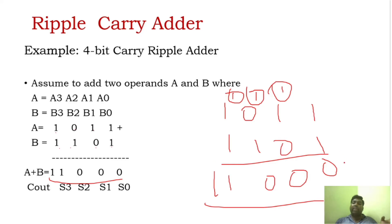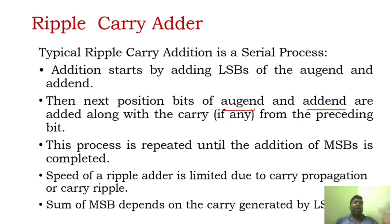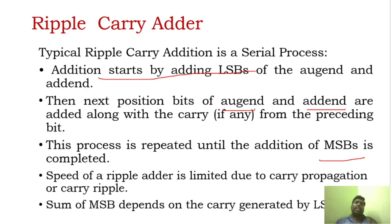You have to understand that the carry which is generated here is carried to the next stage — that is, it is rippled throughout. This is why we call it a ripple carry adder. We can implement this addition using ripple carry adder. The carry will ripple from LSB to MSB, and we are doing the same steps till we reach the MSB. The addition starts by adding the LSB, and the carry is propagated to the next stage. The carry propagates from LSB to MSB — that is why it is called ripple carry adder.